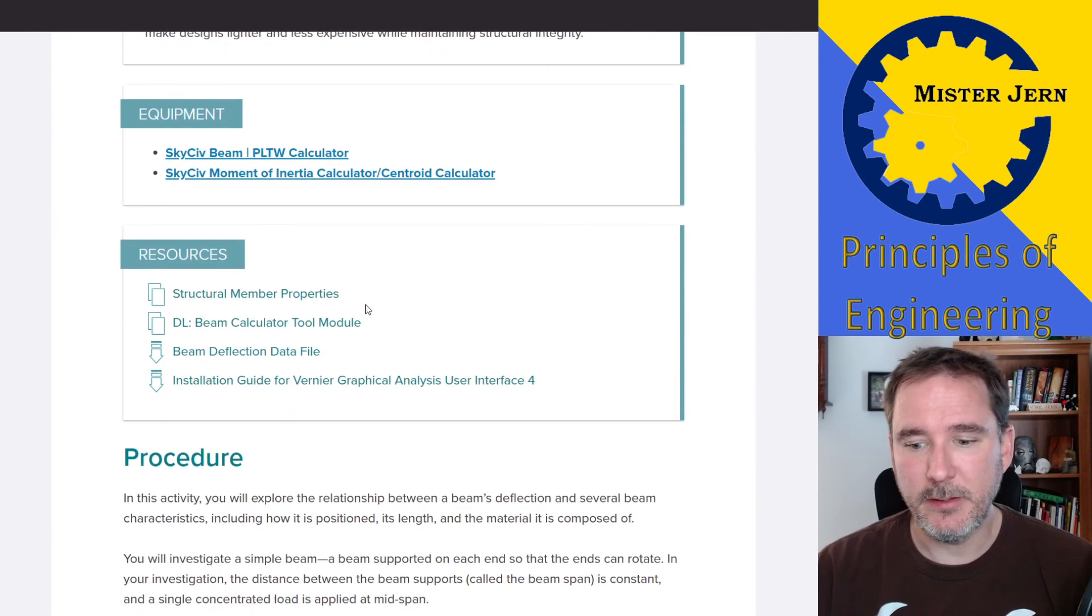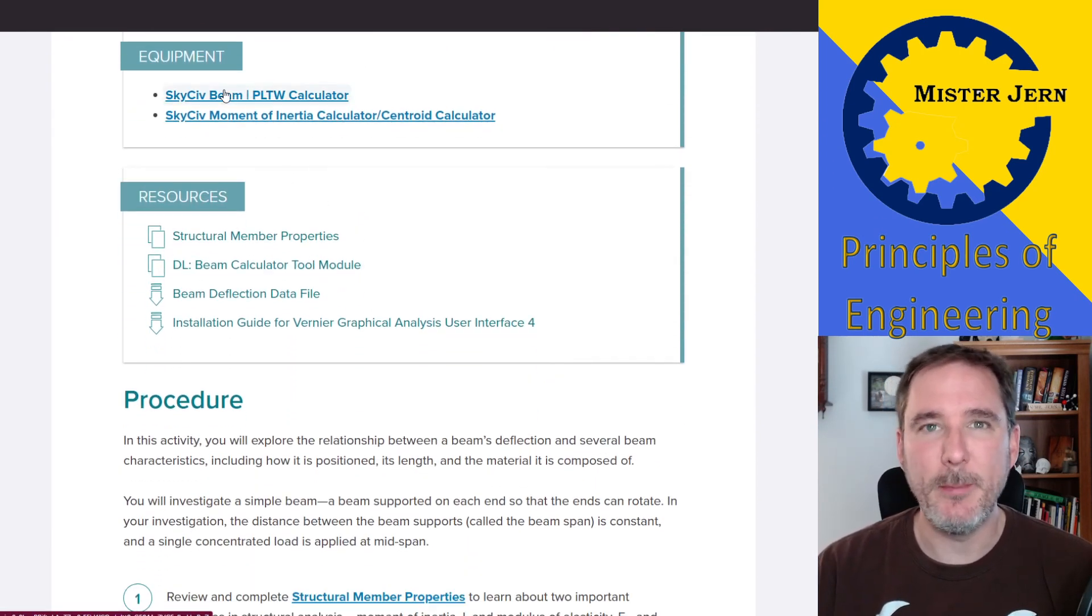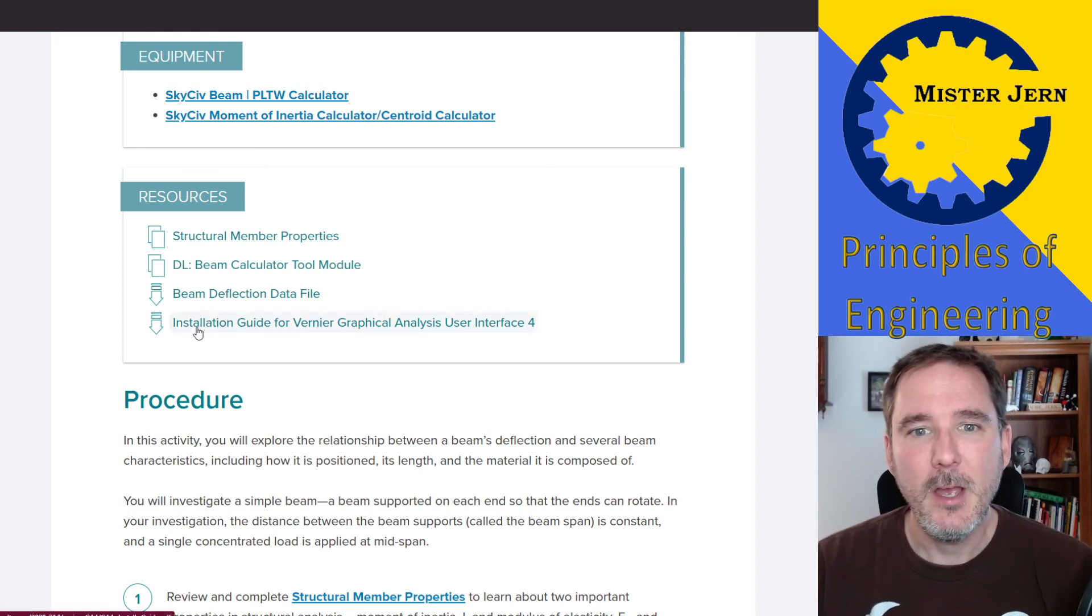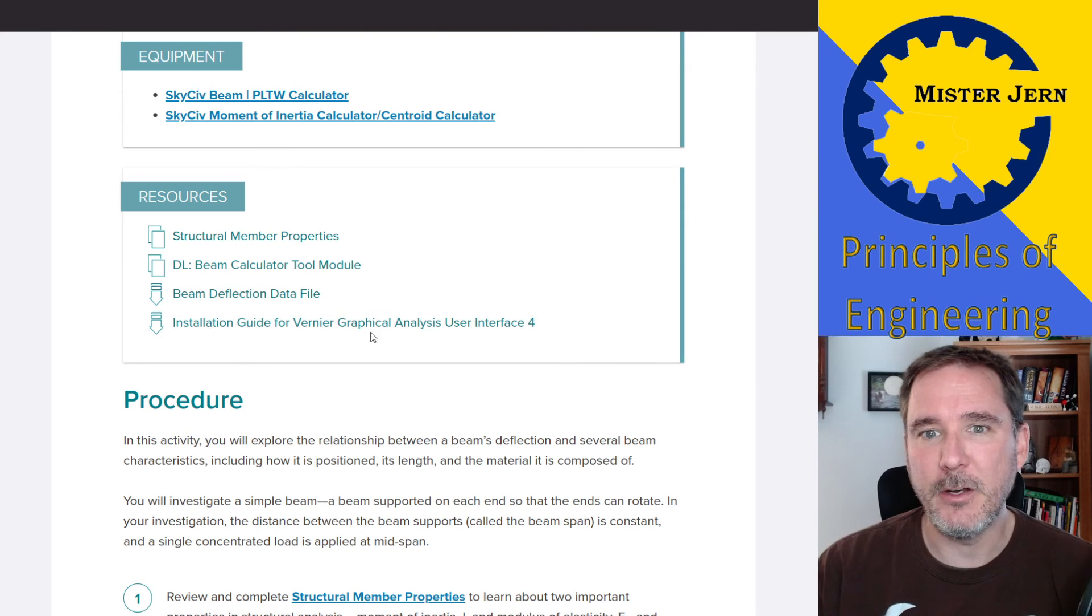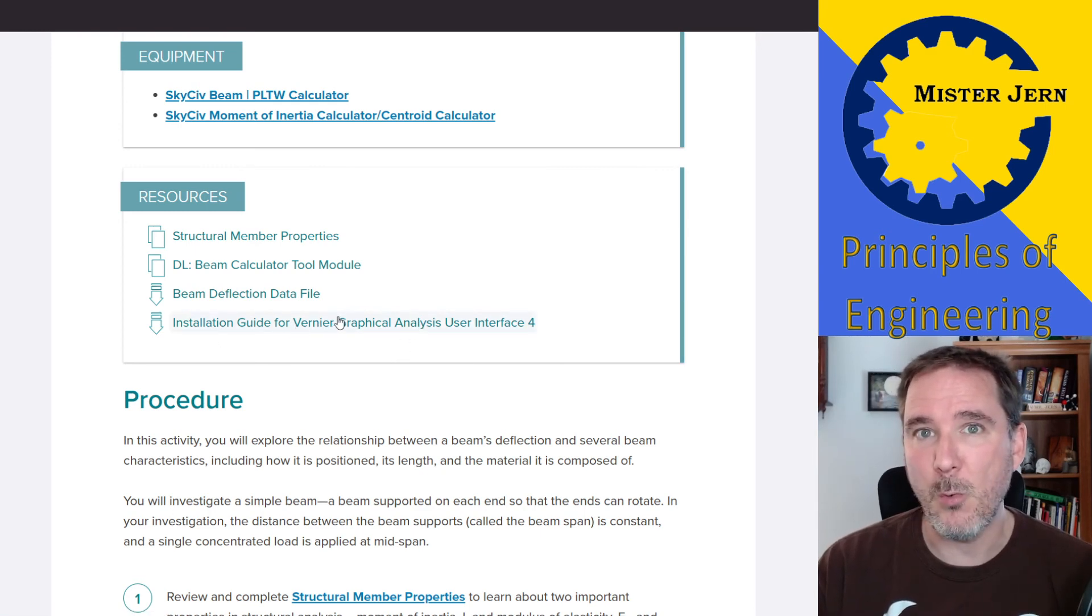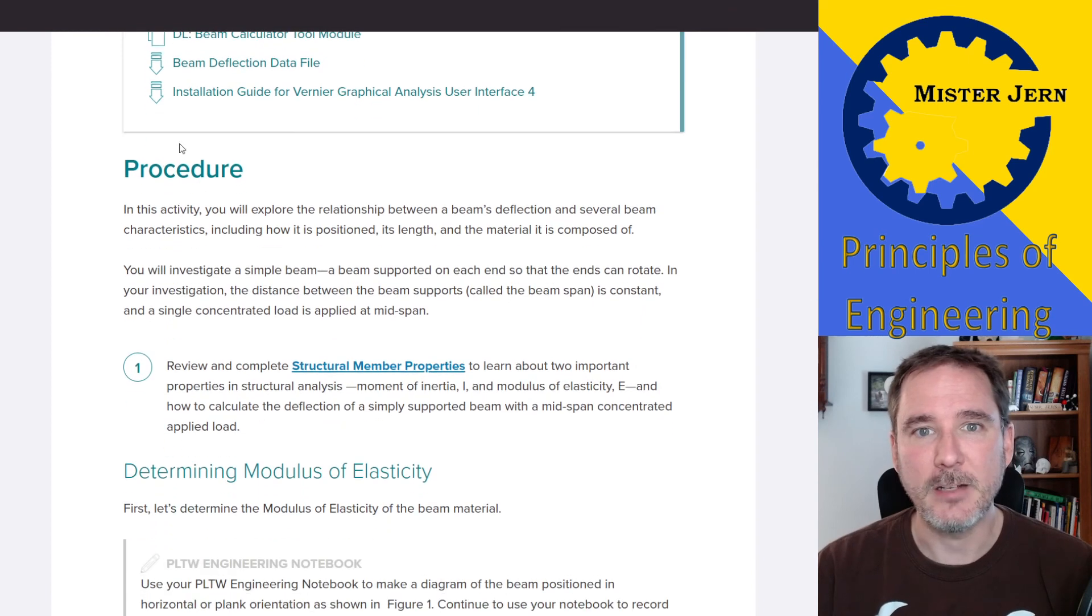Scrolling down, here's some of the equipment you're going to be using. Resources: this is going to be the PowerPoint that we went through. This is a little module for a part later on in this activity. Here is going to be a beam deflection data file. You don't have to click any of these right now. Honestly, you don't need to worry about installing Vernier Graphical Analysis. You've already used it many times. It's probably already installed on your computer. If you have trouble with that, talk to me if you still need to install it.